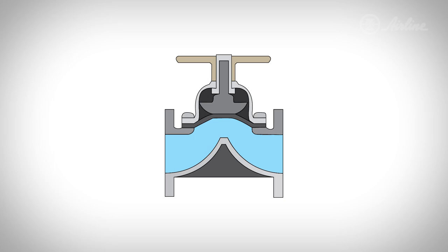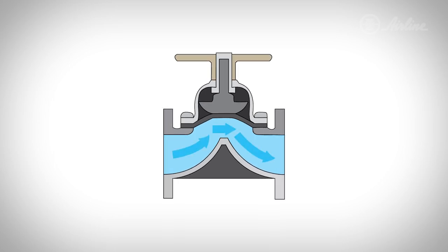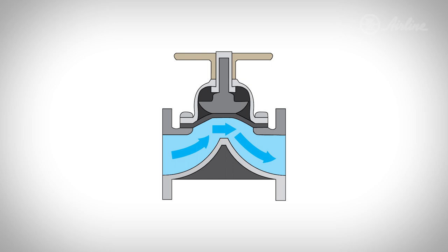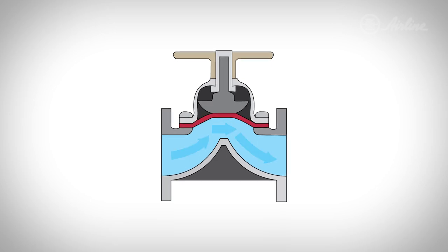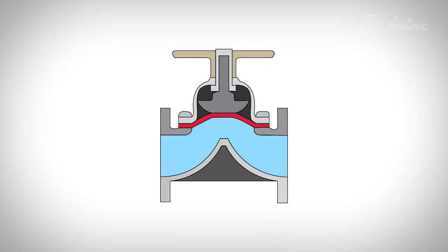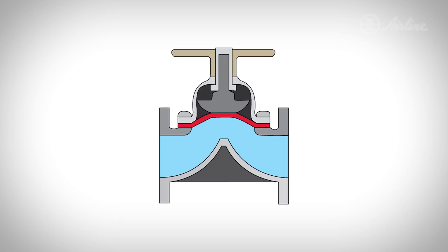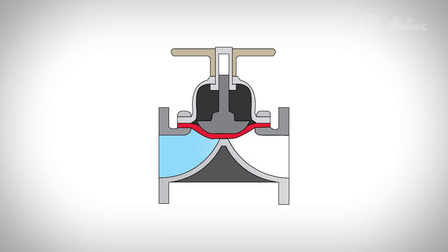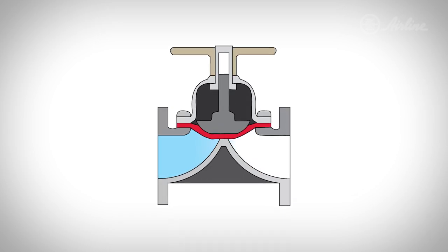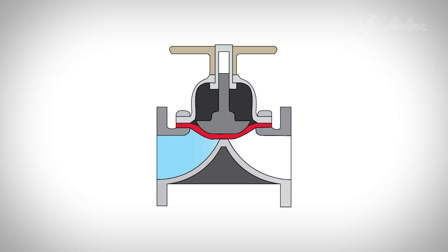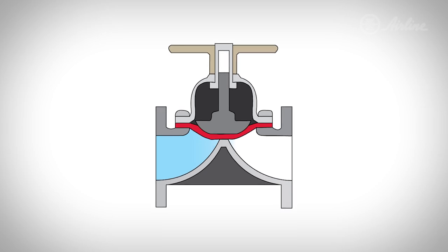Diaphragm valves, also known as membrane valves, are named after the diaphragm that extends and retracts to isolate the flow path. In this illustration you can see a non-activated diaphragm valve along with the flow path of the medium. The flexible diaphragm is located just below the compressor. When the valve is activated, the compressor pushes the diaphragm towards the valve seat. When the diaphragm completely seals the valve seat, the flow path becomes isolated.